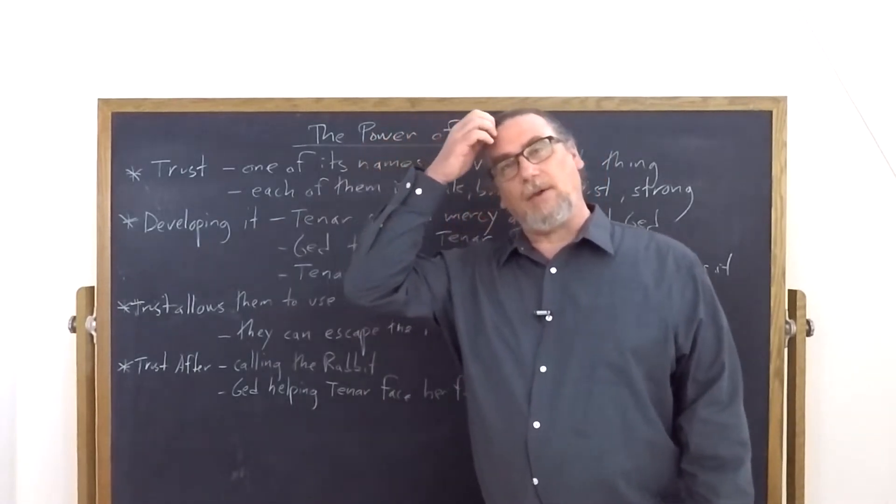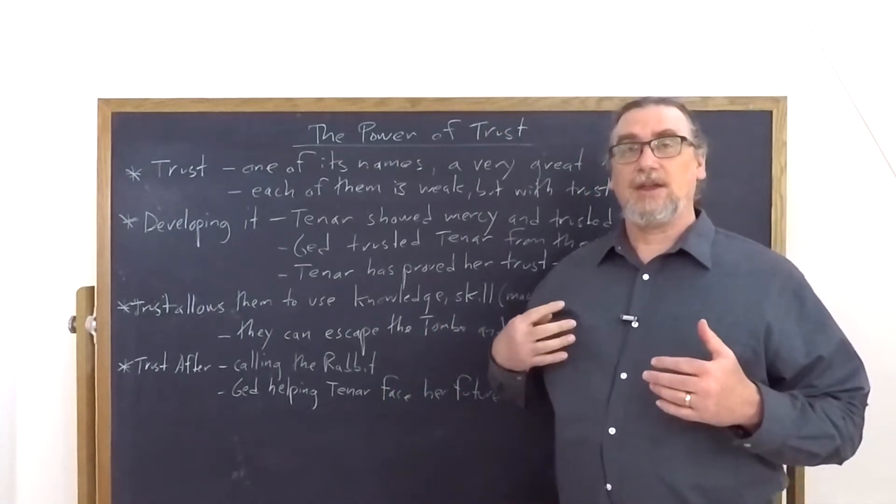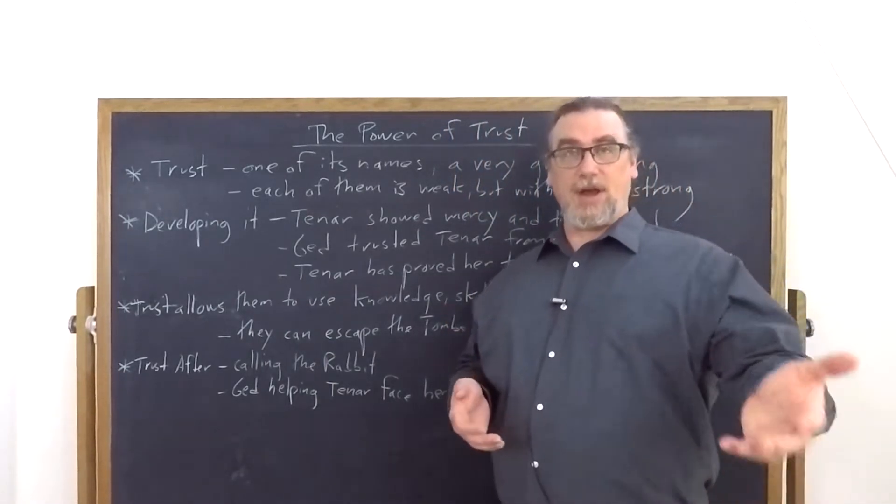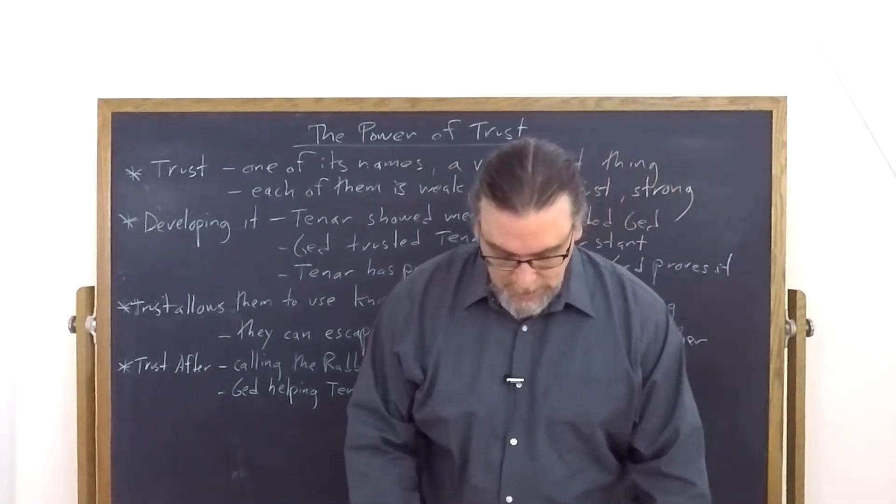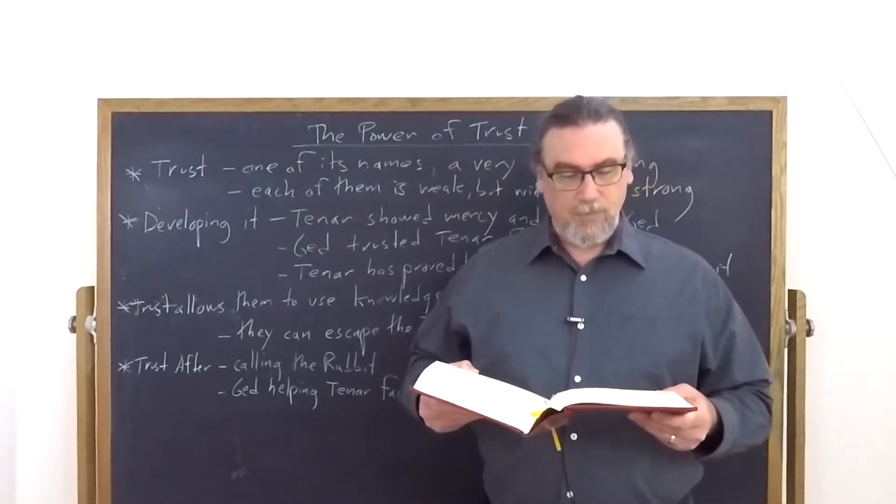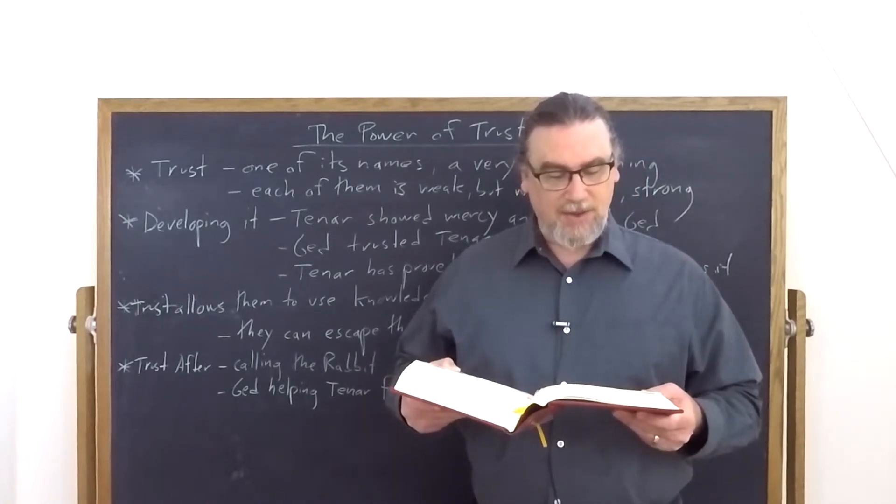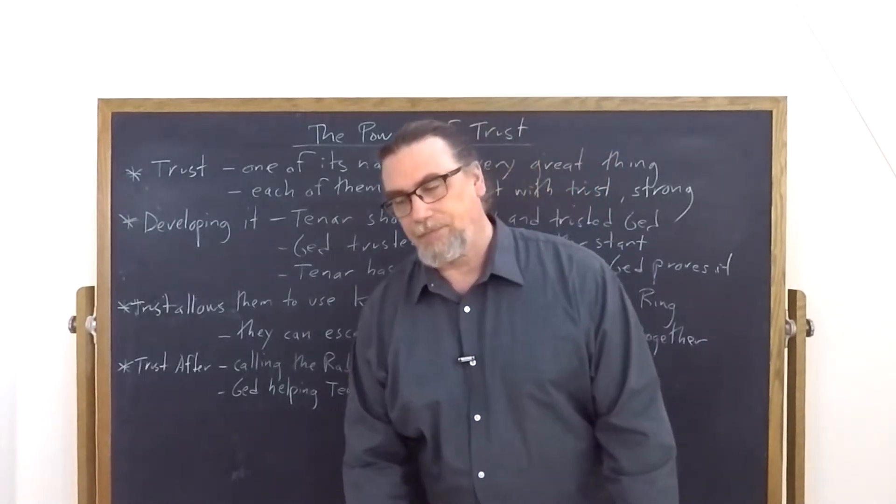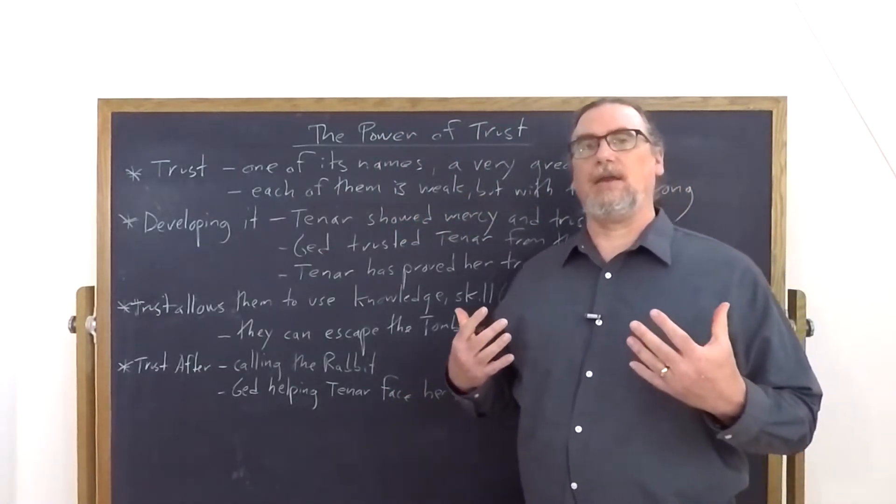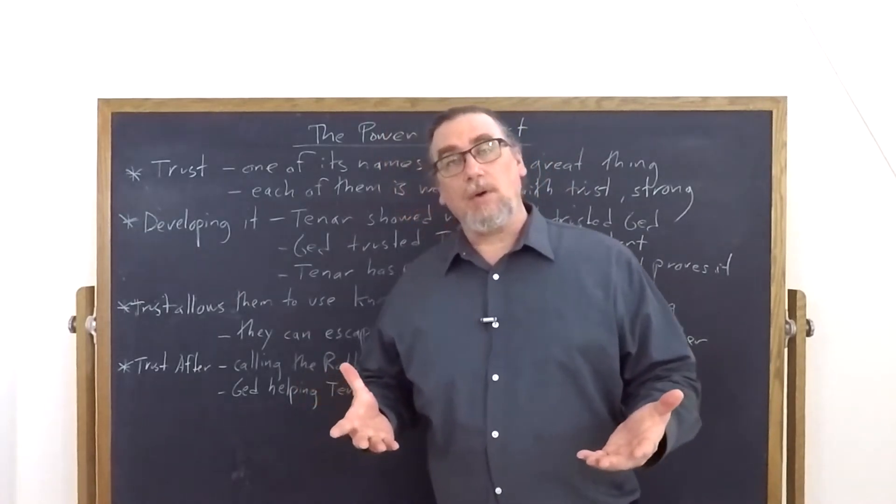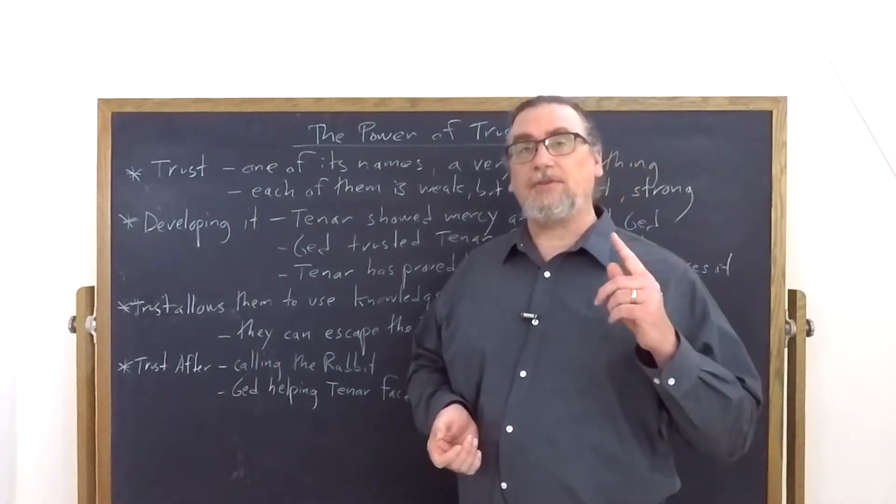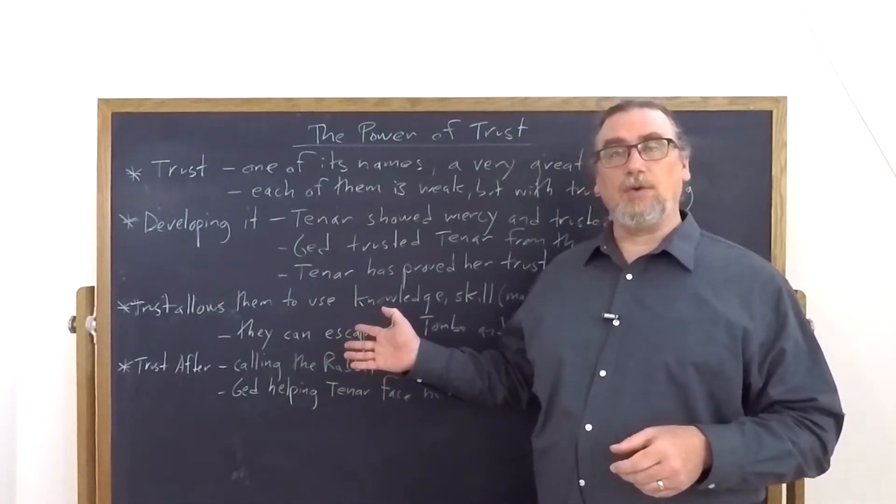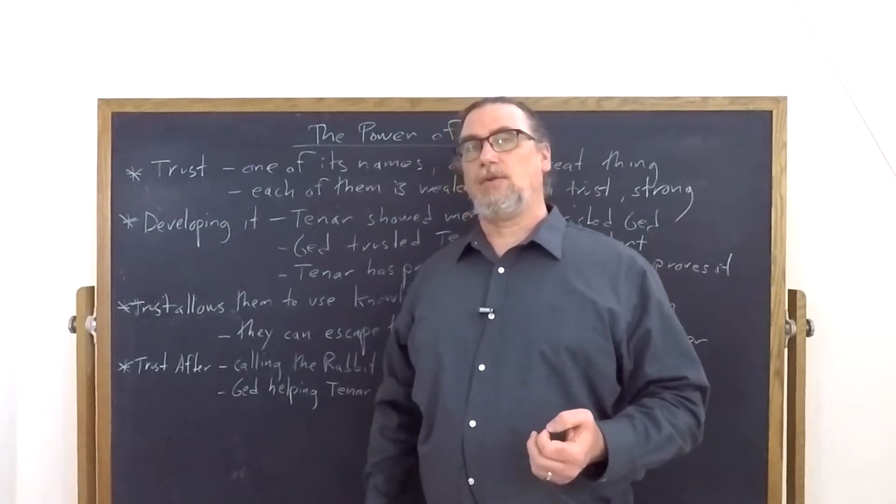And this doesn't mean that they don't actually call a rabbit, but they don't kill the rabbit. In fact, he teaches her the word in the old speech, the true speech for rabbit. And she does call a rabbit, but why not call a rabbit? Well, because they're not in dire necessity. If they were, then that would be in some respect allowable, but it would still be a breach of trust on the part of Ged, using his magic to compel something to give itself to him.